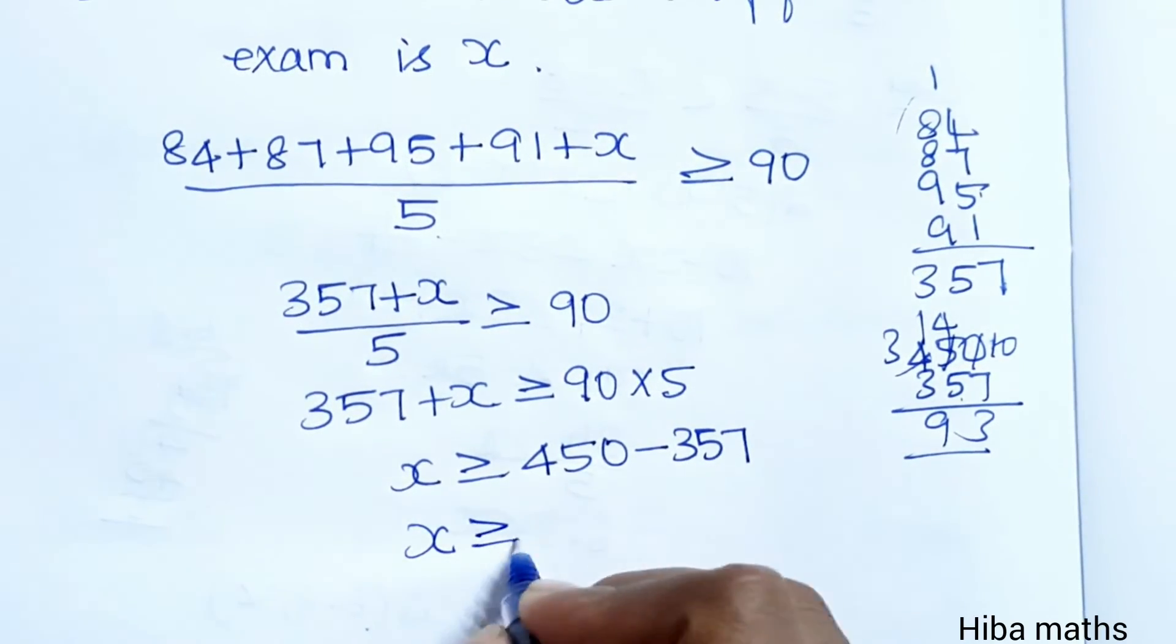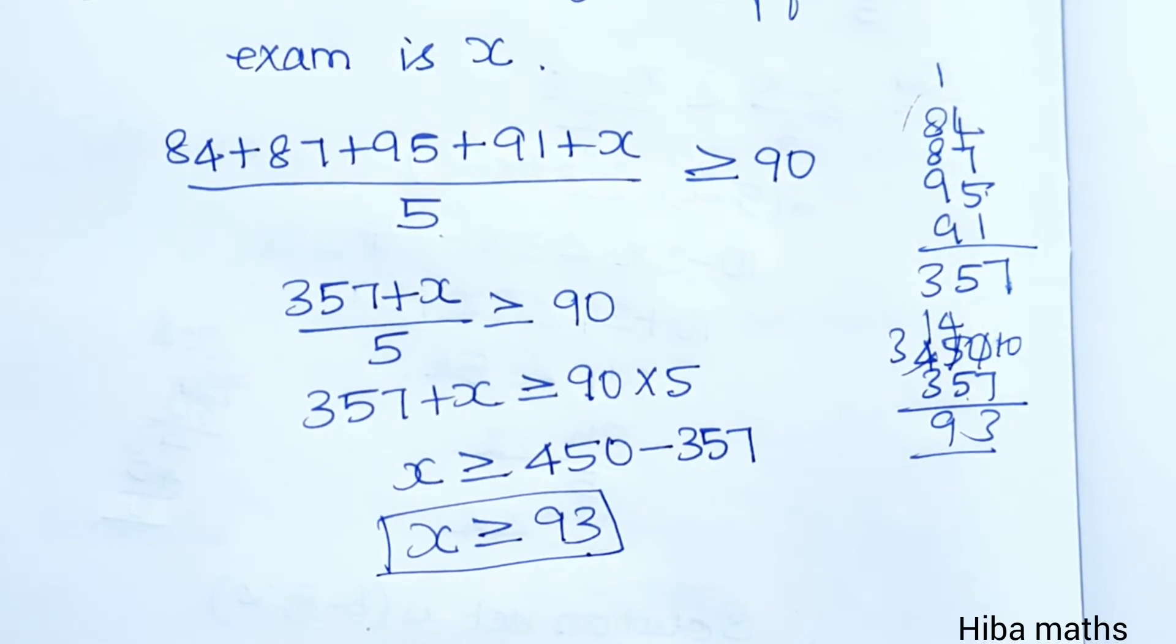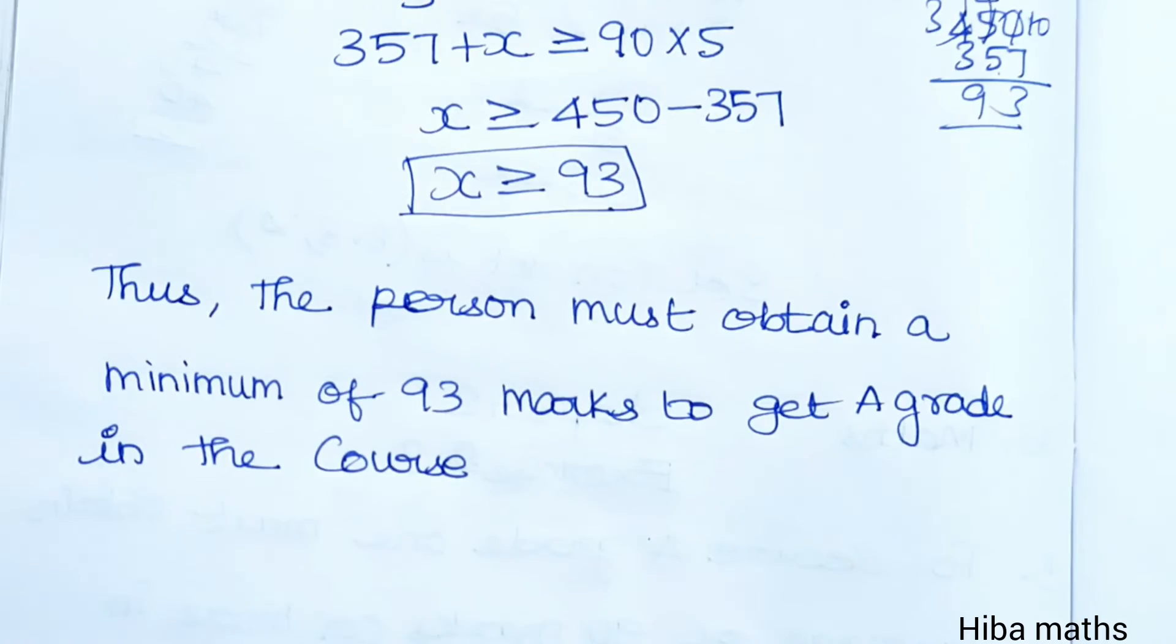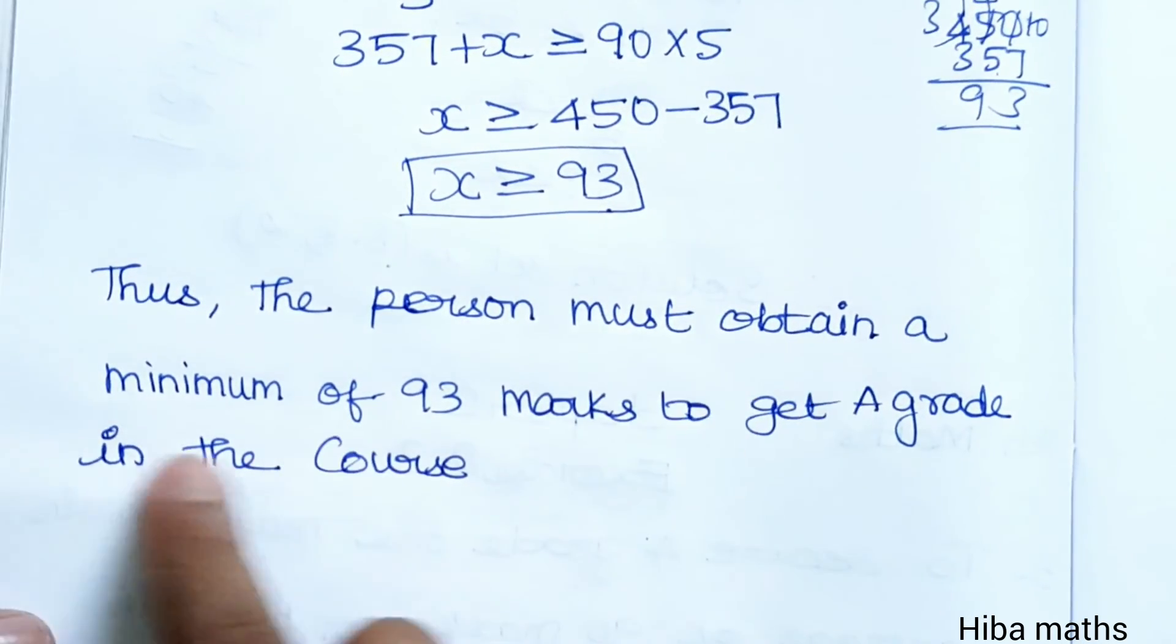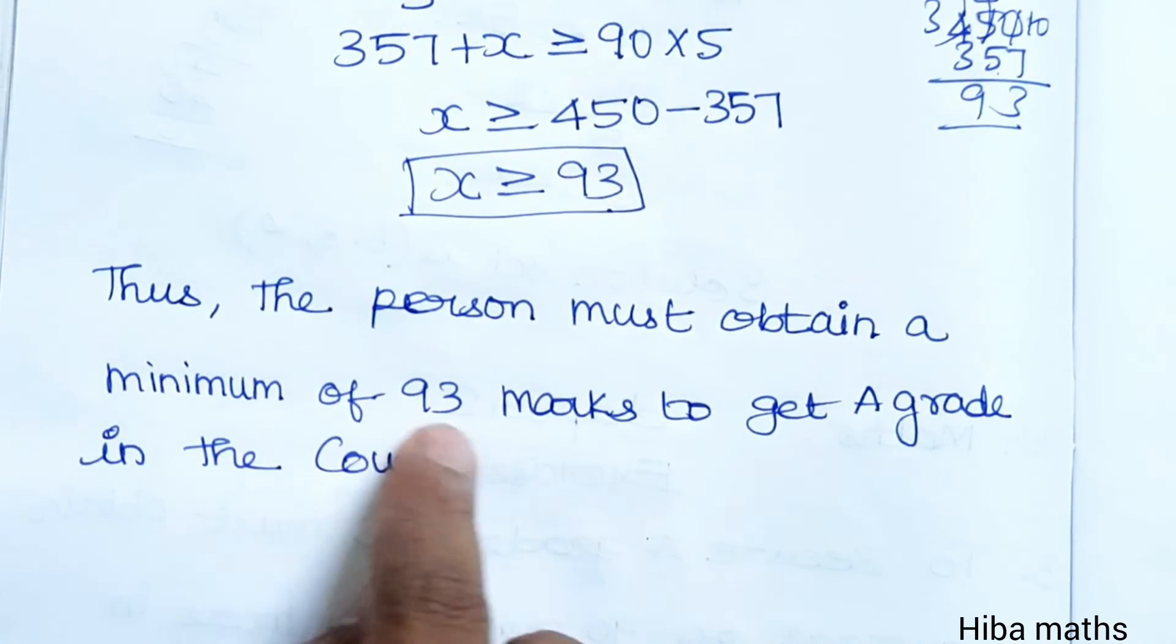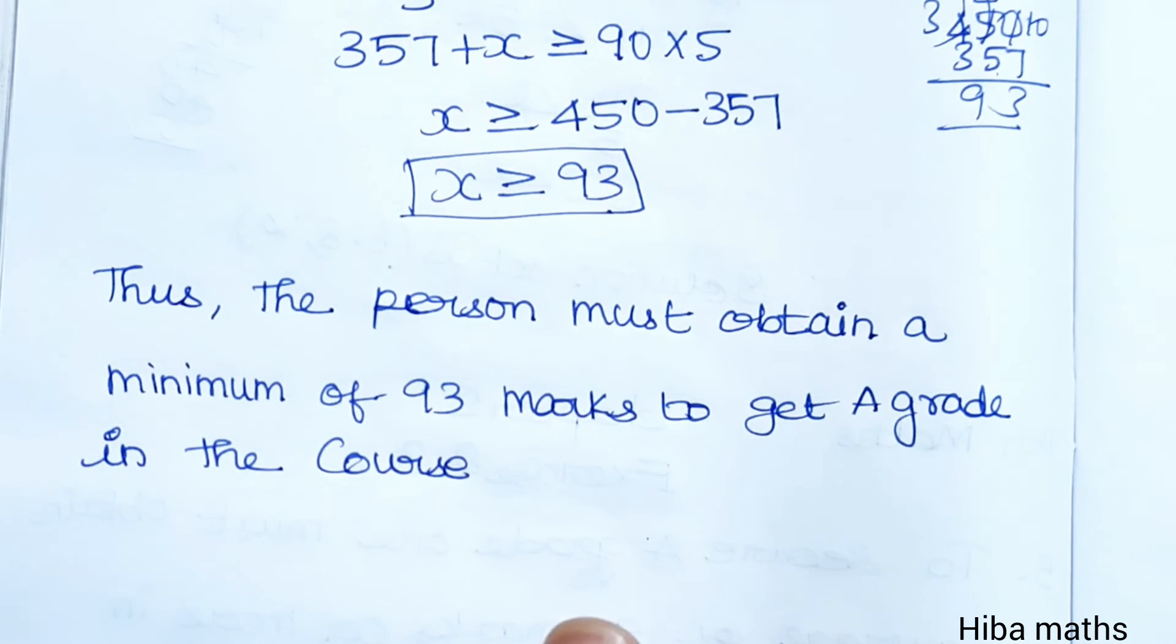So, x should be greater than or equal to 93. 93 marks or higher than that. This statement is greater than or equal to 93. Thus, the person must obtain a minimum of 93 marks to get A grade in the course. This will be greater than or equal to 93. Thank you so much for watching.